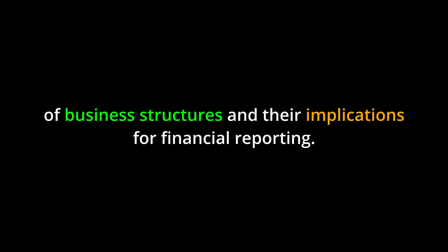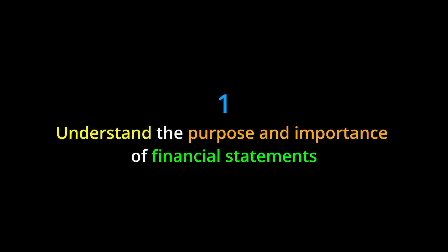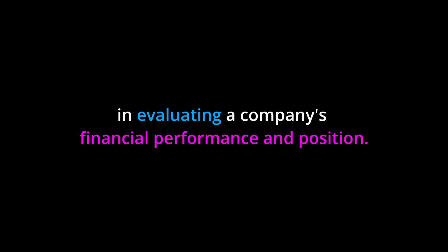The chapter also discusses the different types of business structures and their implications for financial reporting. Learning objectives: by the end of this chapter you should be able to: one, understand the purpose and importance of financial statements in evaluating a company's financial performance and position; two, identify the different types of financial statements and their components.